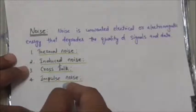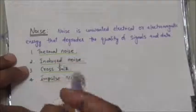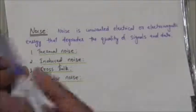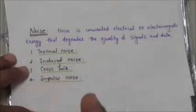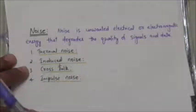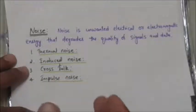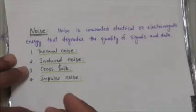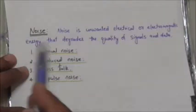Thermal noise is the random motion of electrons in a wire, which creates an extra signal not originally sent by the transmitter. Induced noise comes from sources such as motors and appliances — these devices act as the sending antenna and the transmission medium acts as the receiving antenna.